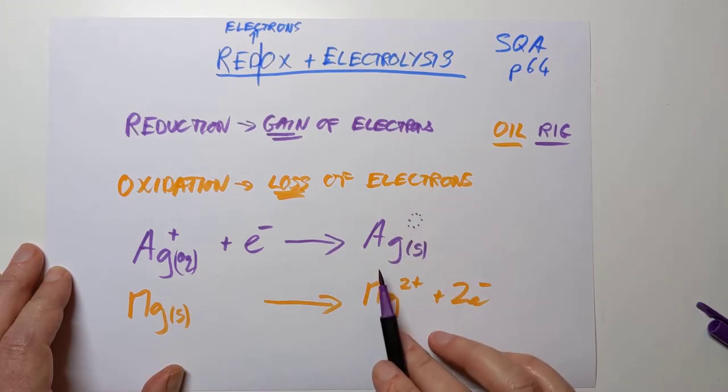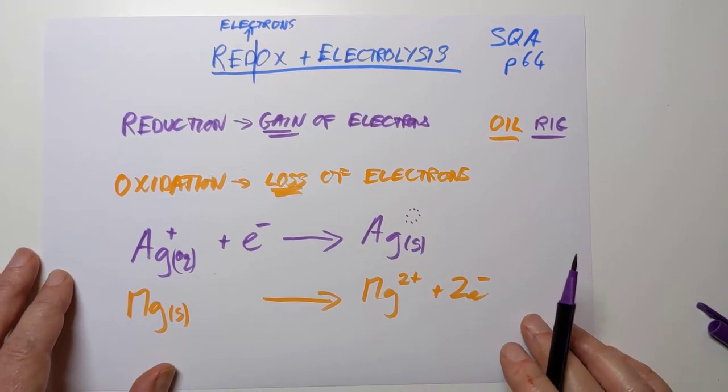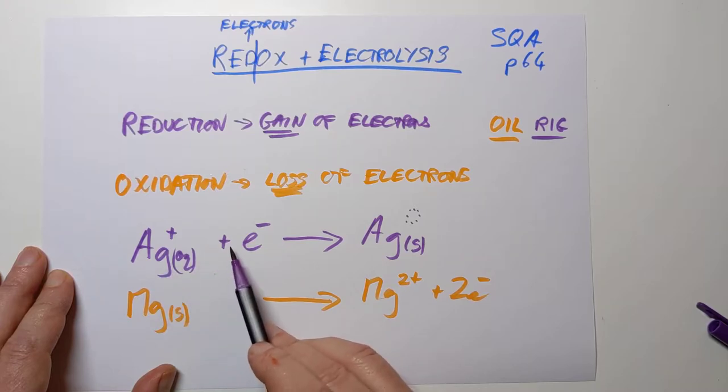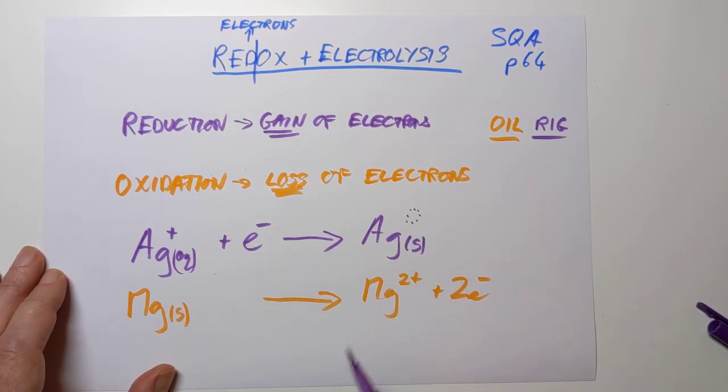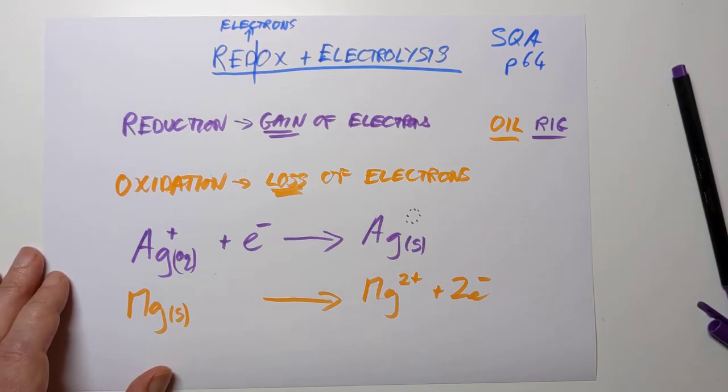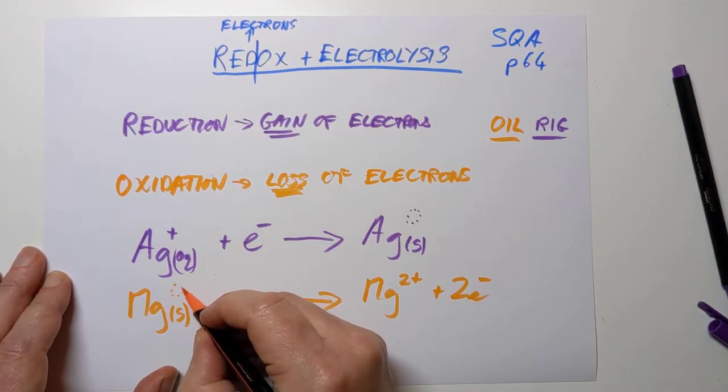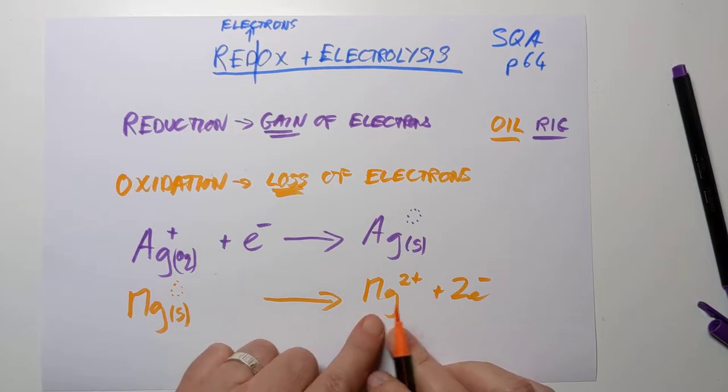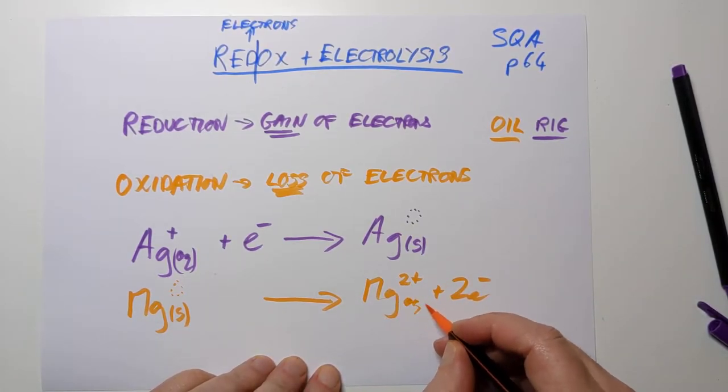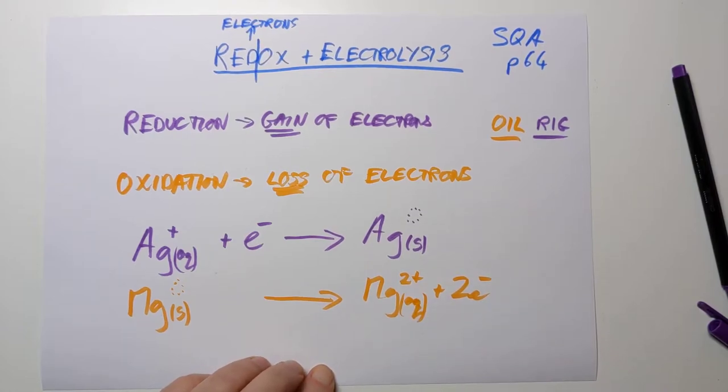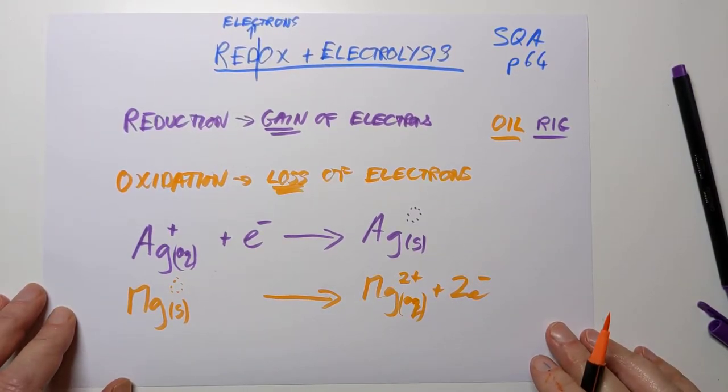In the same color code here, we've got two examples. We've got silver ions gaining electrons to form silver atoms with no charge, of course. And we have magnesium atoms with no charge here going to lose these two electrons and form Mg²⁺aq ions.